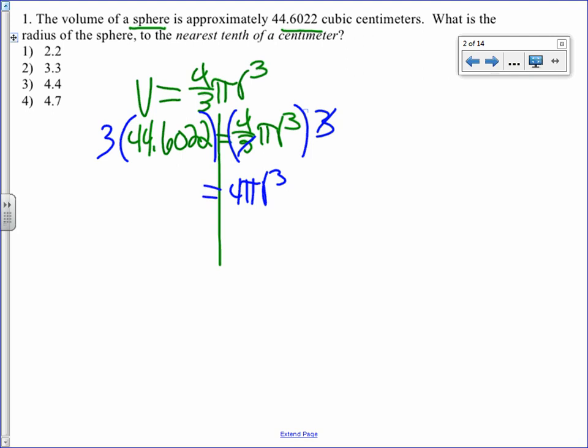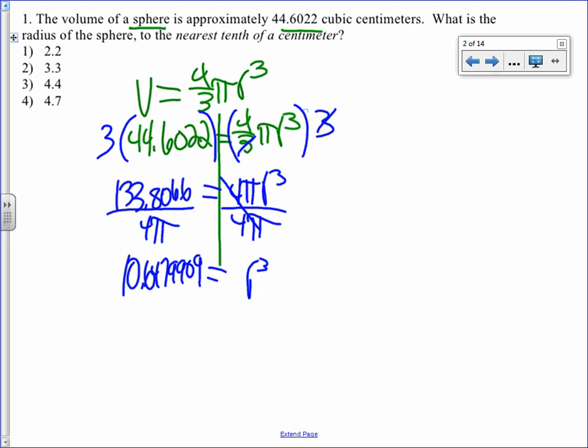And I get 44.6022 times 3, which is 133.8066. To get r by itself, I divide by 4 pi. When I divide that by 4 pi, I get 10.6479909. At this point, I have to do the cubed root. To do the cubed root in your calculator, you do math 4. That gives me to the nearest tenth, 2.2.